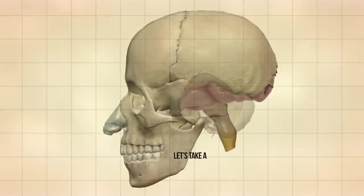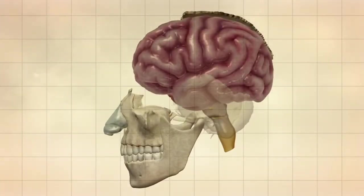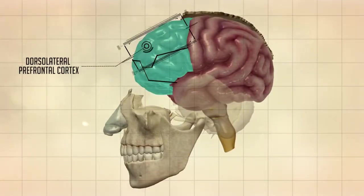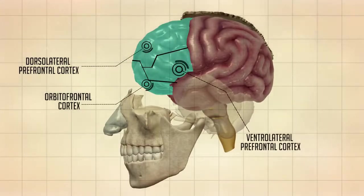Let's take a closer look at the prefrontal cortex subdivisions. This area of the brain has been divided into three main subdivisions known as the dorsolateral prefrontal cortex, orbital frontal cortex, and the ventral lateral prefrontal cortex.